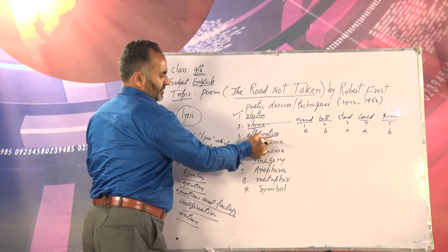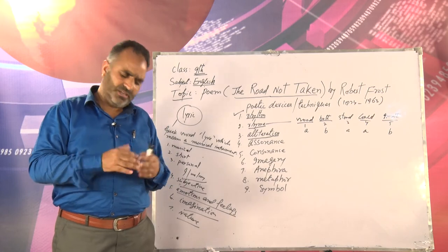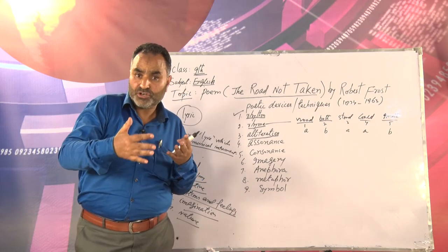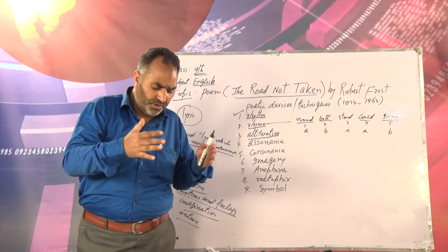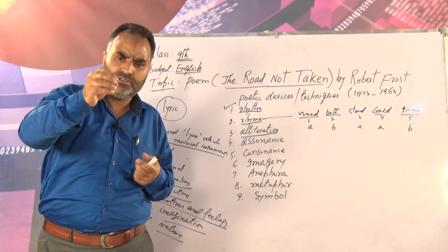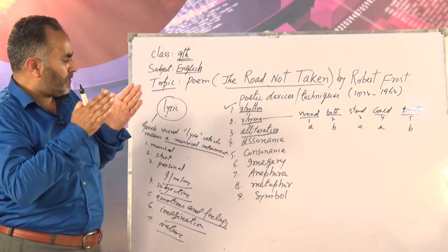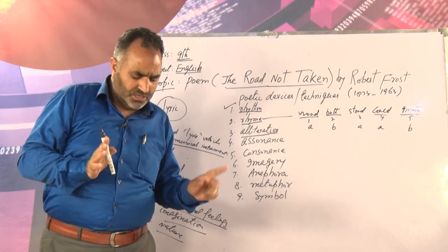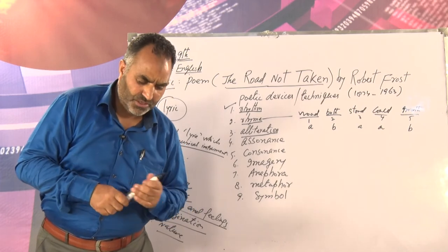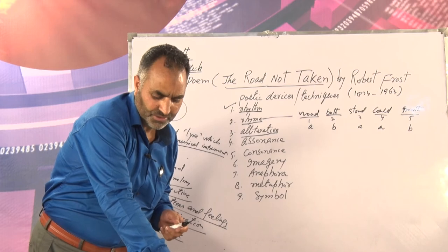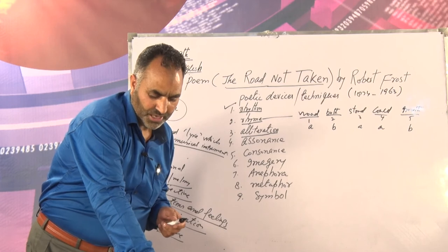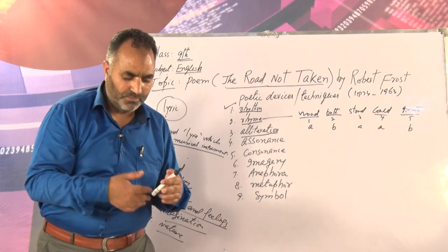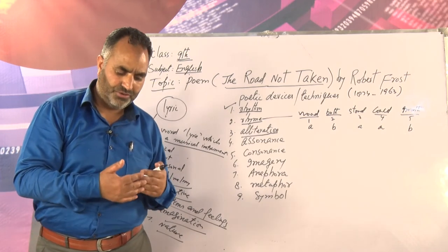Another device we find is alliteration. In poetry, you have to look at the language — you have to see how the poem has been written, how it has been structured, which words have been used, because the poet uses selected words and has to say a lot in few words. Alliteration is when initial consonant sounds are repeated more than once — within a line or within a stanza. For example in stanza three, you find 'lay' and 'leaves' — you see 'black' and 'back' — you see 'way' and 'would' — so the poet is repeating initial consonant sounds: that is alliteration.